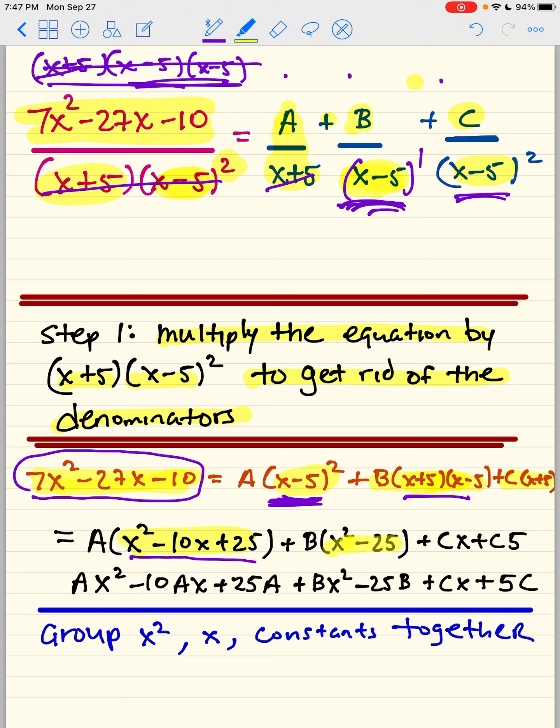x plus 5 times x minus 5 is x squared minus 25 times the B, and then Cx plus C times 5. I put C5 there, but I'll clean it up. So I'm going to distribute my A to get Ax squared minus 10Ax plus 25A, Bx squared minus 25B, Cx, and 5 times C.